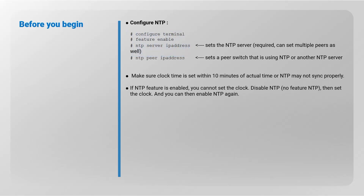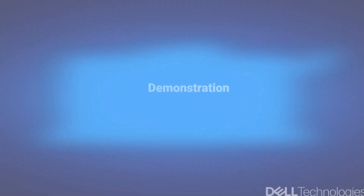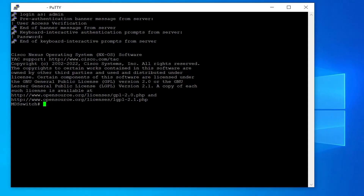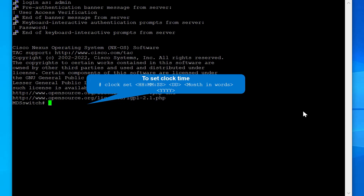Make sure the clock time is set within 10 minutes of actual time, as NTP may not sync properly otherwise. If the NTP feature is enabled, you cannot set the clock — disable NTP first, then set the clock, then re-enable NTP. To set the clock time, use the following syntax. This example sets the clock to 12 AM, November 4th, 2022.